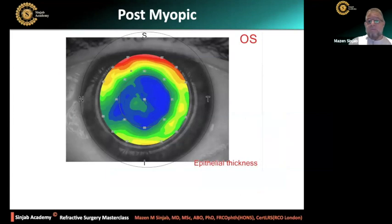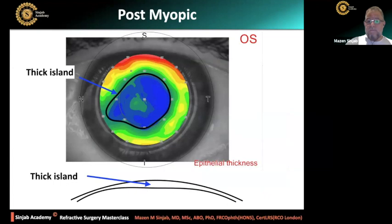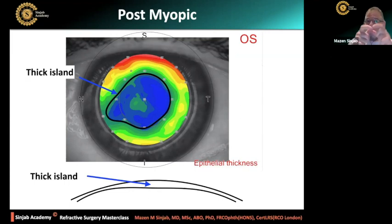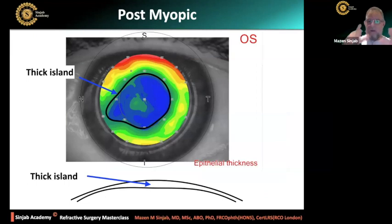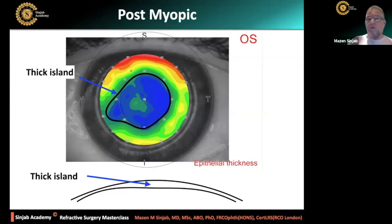Post-myopic: the epithelium thickens in the center — very thick in the center — because the stroma is very flat. This is the cause of regression after myopic treatment, especially with a small optical zone. If you choose a small optical zone, you will create a possibility of more myopic regression. So don't play with the optical zone just to treat patients.